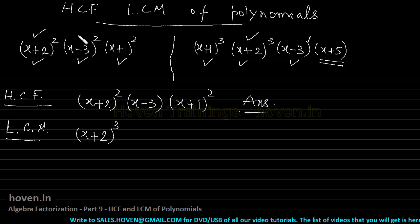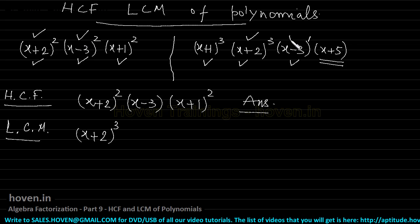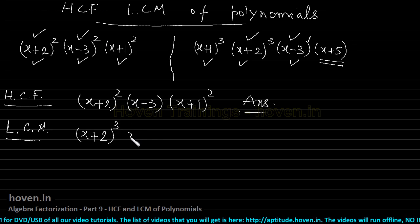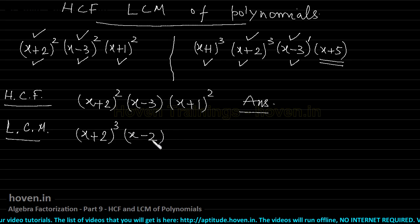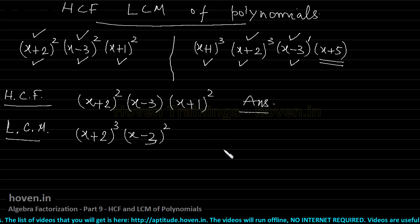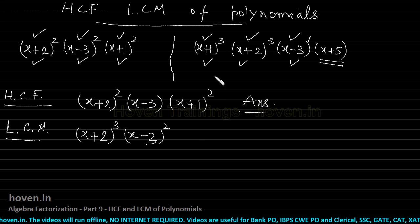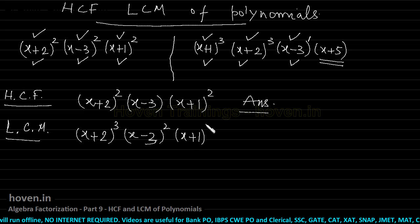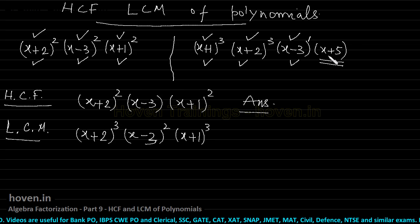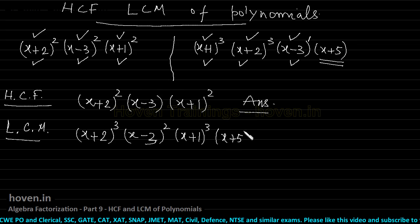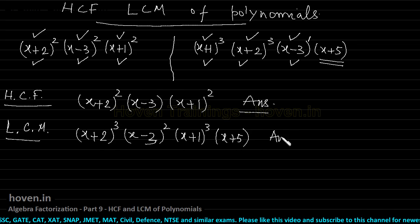Repeat with (x−3): it is on this side and the right side also. The higher power out of 2 and 1 is 2, so we take (x−3)². For (x+1)², tick mark on both sides. The higher of 2 and 3 is 3, so we write (x+1)³. These three are done. One factor is left. In LCM we do not ignore it — we write it as such. So the LCM is the full product of all these terms.